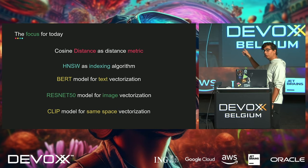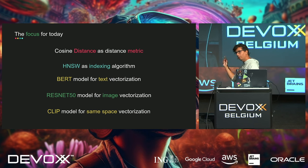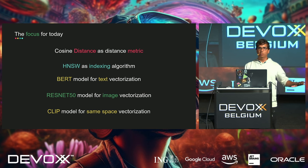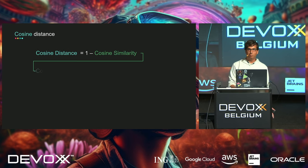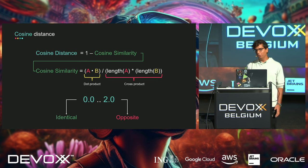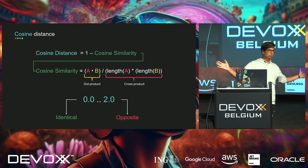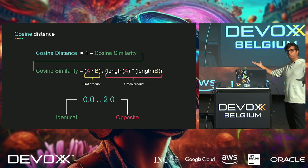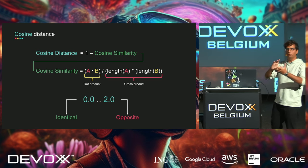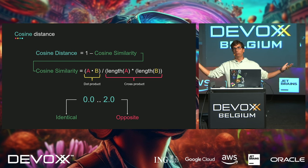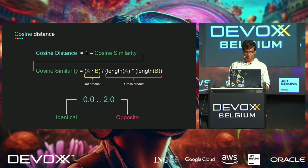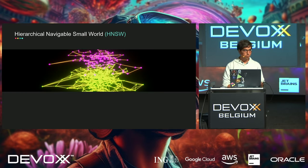For today's demo we'll be using cosine distance as a distance metric, Hierarchical Navigable Small Worlds as the indexing algorithm, a BERT model for text vectorization, a ResNet-50 model for image vectorization, and a CLIP model for same-space vectorization. Cosine distance: if the distance is 0.02, vectors are identical; if it's 2.0, two vectors are exactly opposite. So Java and C# might have a distance of 0.001, while Java and JavaScript would be like 2.5 — breaking all limits.